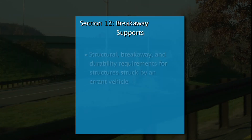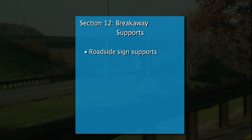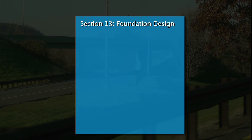Section 12, titled Breakaway Supports, addresses the structural, breakaway, and durability requirements for structures required to yield, fracture, or separate when struck by an errant vehicle. These include roadside signs, luminaires, call boxes, and pole-top mounted traffic signal supports.